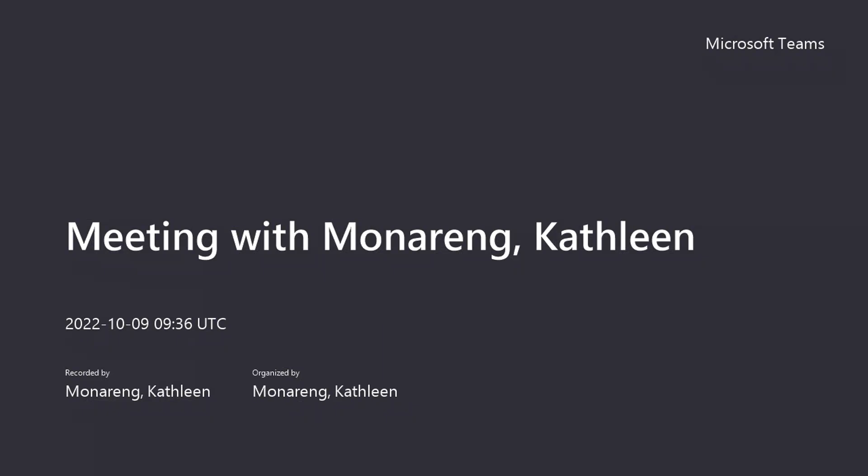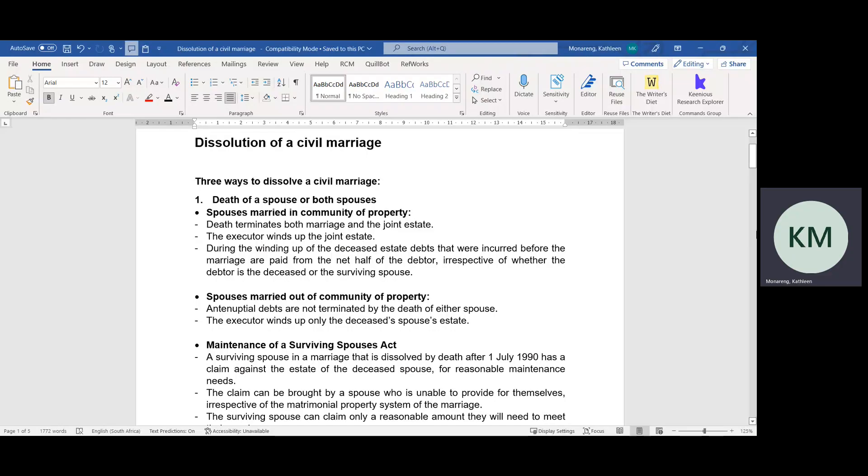This is a summary of termination of a civil marriage. A civil marriage can be terminated or dissolved in three ways.